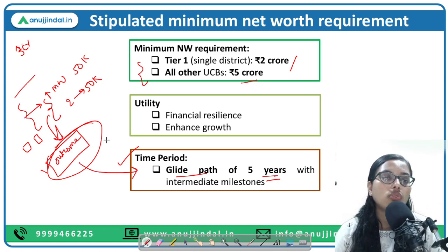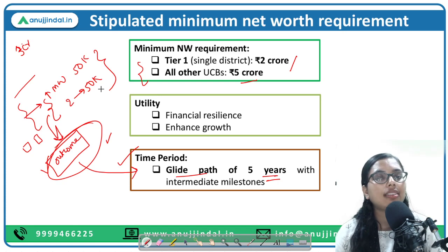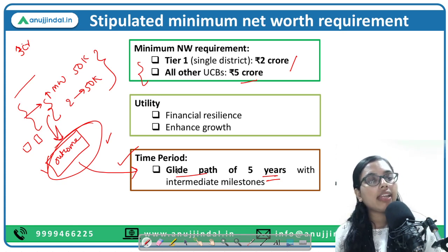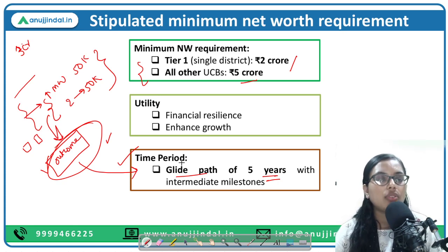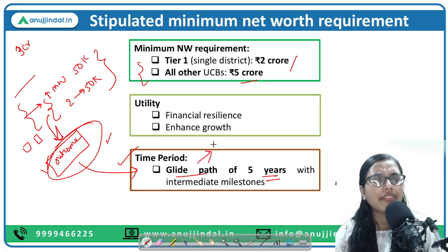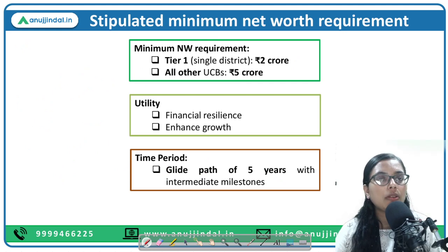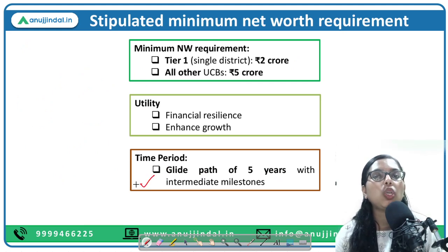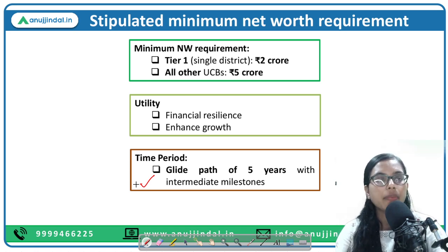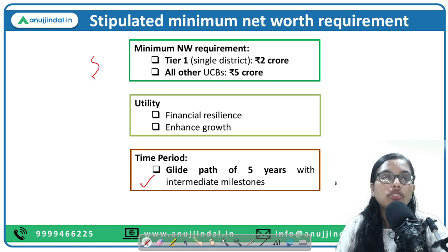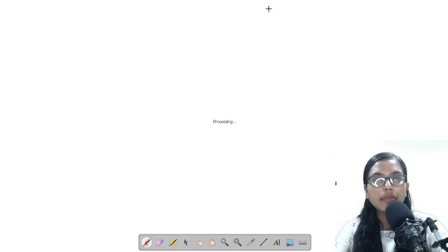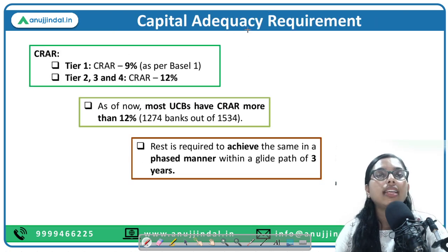The gliding path means undertaking certain courses of action in small incremental steps to achieve the desired outcome. This is a technical term used by RBI and the Finance Ministry, so you should be clear about what it means — if asked in a newspaper reading context or interview. That was the regulation regarding minimum net worth requirement.